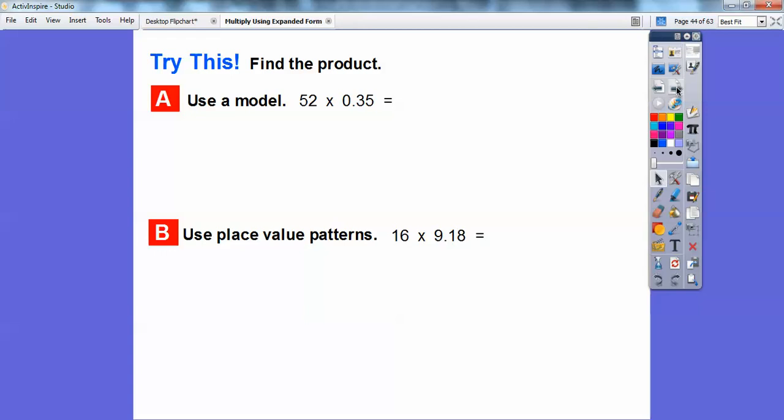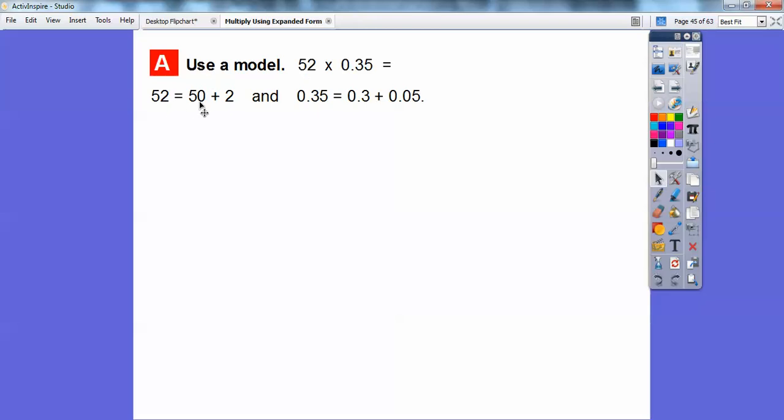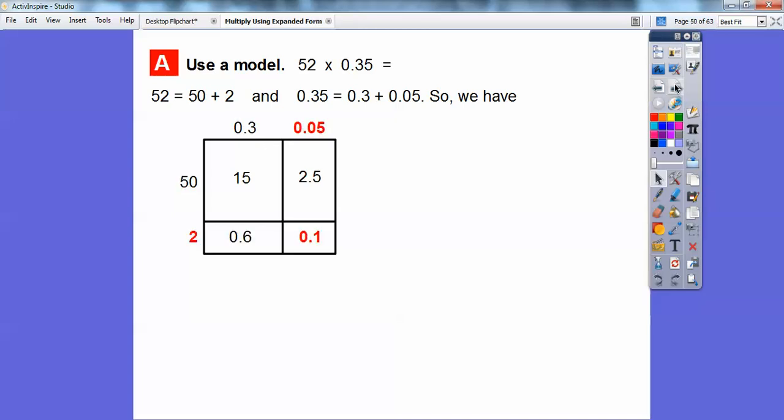Let's try this. Let's find the product. We're going to find the product in two different ways. Here we'll use a model with rectangles. Here we'll use the place value pattern and move that decimal over two places to the right and multiply. So let's do one at a time. So 52 is 50 plus 2. 0.35 is 0.3 plus 0.05. So we're going to get these rectangles right here. Here's 50 plus 2. Here's 0.3 plus 0.05. And then we'll just go ahead and multiply. This times this gets us 15. 50 times 0.3 gets us 15. And then 50 times 0.05 is going to get us 2.5. 2 times 0.3 is 0.6. And then finally 2 times 0.05 is 0.1. So we add all those partial products up and we get 18.2. So 52 times 0.35 is 18.2.